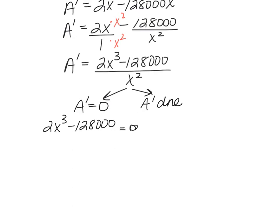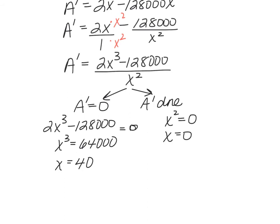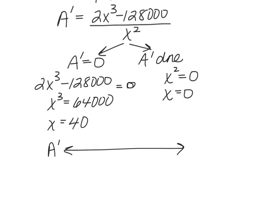Solving the numerator: 2X³ − 128,000 = 0. Adding 128,000 and dividing by 2 gives X³ = 64,000. Taking the cube root, X = 40. From the denominator X² = 0, so X = 0. These are our critical numbers. We'll do the first derivative test, testing values around these critical numbers to determine if we have a maximum or minimum.